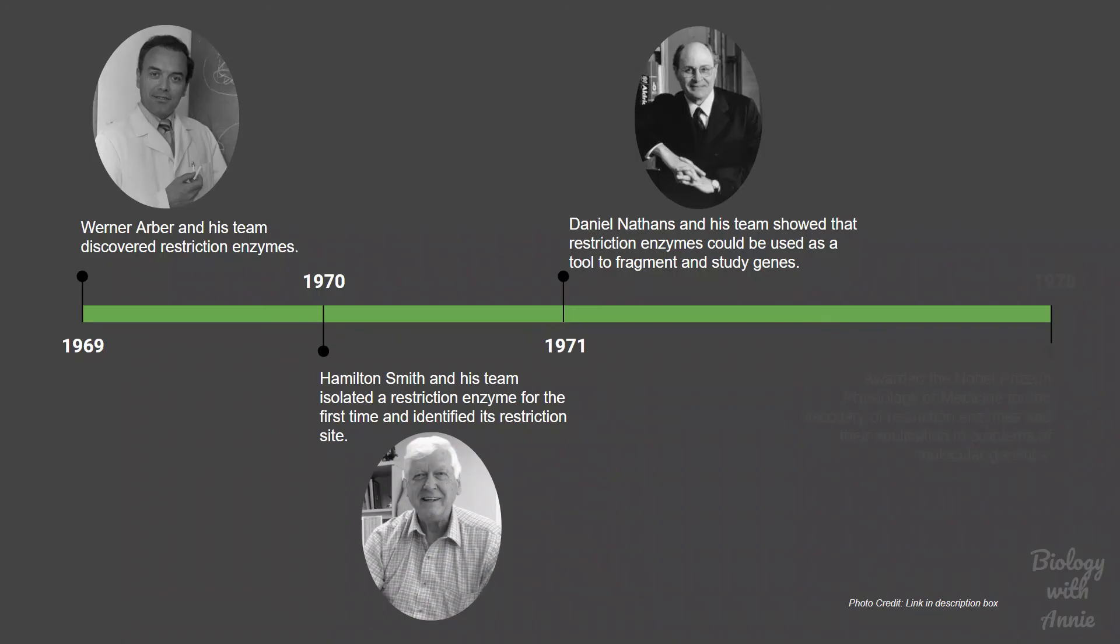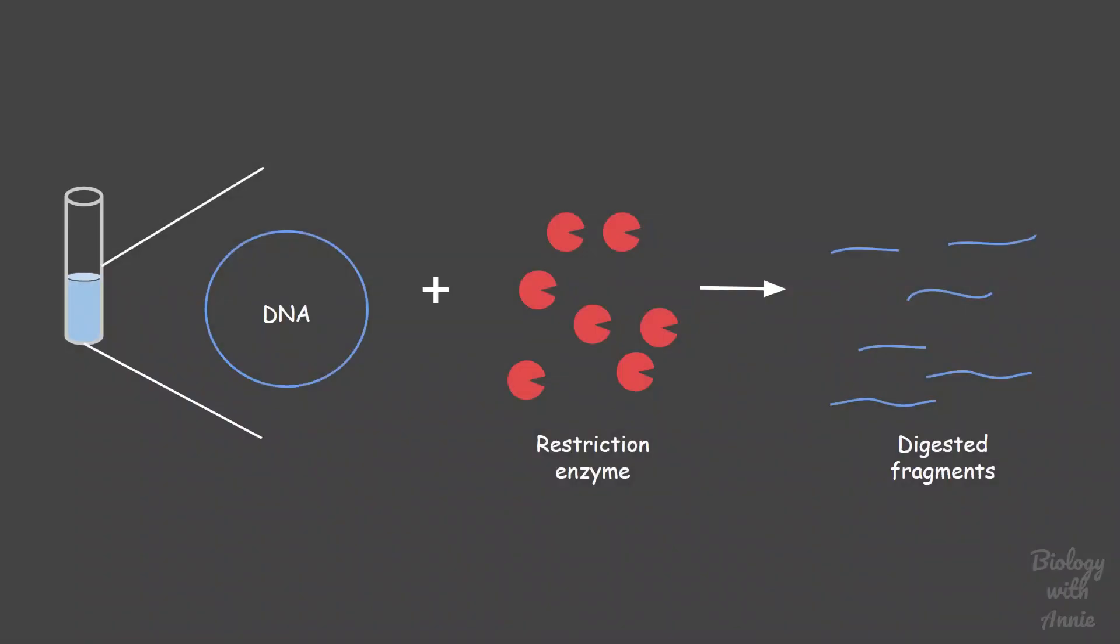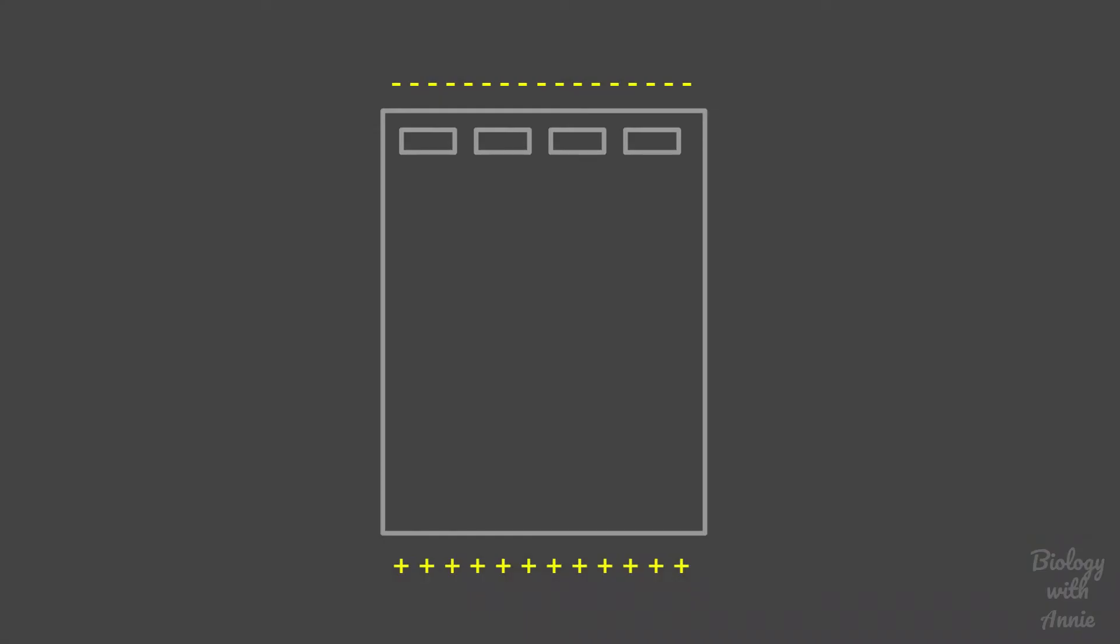In an effort to study the function of the different genes in a cancer-causing virus, Daniel Nathans used restriction enzymes to fragment a viral genome. He was then able to separate the resulting fragments using a technique known as gel electrophoresis.